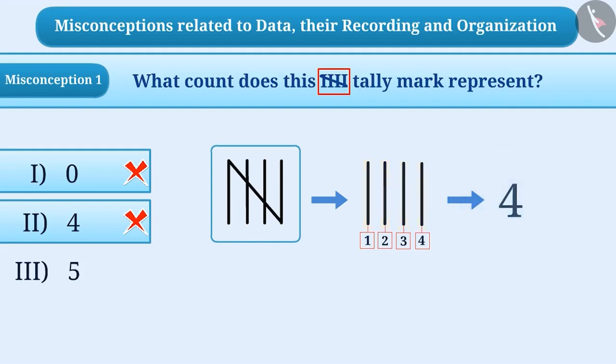If a slanted line is drawn on four lines, then the slanted line in the tally mark indicates the fifth count. That is, this type of tally mark is counted as five, and the third option is the correct answer.